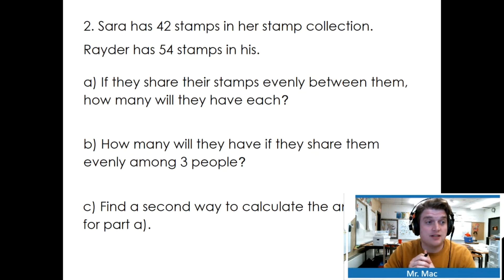Sarah has 42 stamps in her stamp collection. Rader has 54 stamps in his. If they share their stamps evenly between them, how many will they have each? So 54 and 42. I think the easiest way to solve this problem is to add all their stamps together and then divide it by 2. So 42 plus 54, that's going to be 96. And then we need to divide 96 by 2. Go ahead and find the answer.